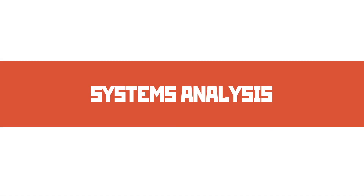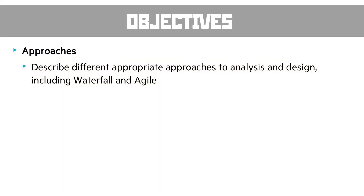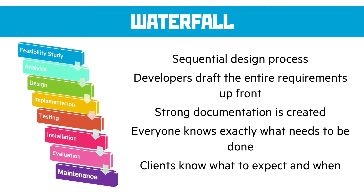This section covers systems analysis, riffing on the systems development life cycle. In this unit we need to describe different appropriate approaches to analysis and design, including waterfall and agile. Waterfall is the traditional sequential design process methodology — you've probably used this in development of your Unit 5 project, or in other subjects. It's where you go through a series of steps to design and develop an idea before building, testing, and installing it.